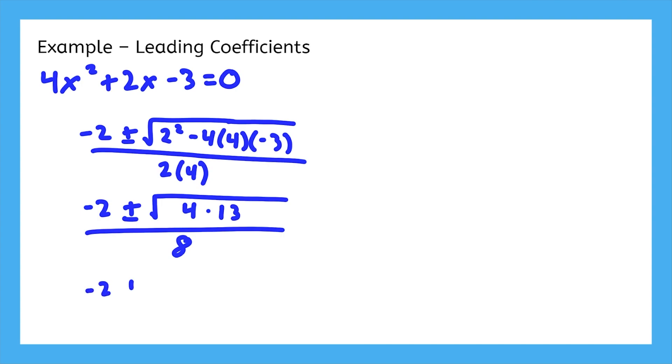So we can pull out the square root of 4, which is 2. The denominator and both terms in the numerator are all divisible by 2, so we can reduce them all. And now we got the same answer as before with a fraction.